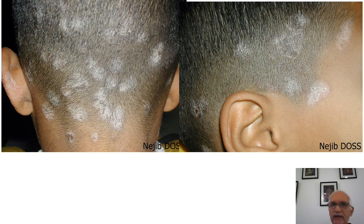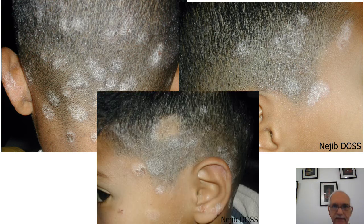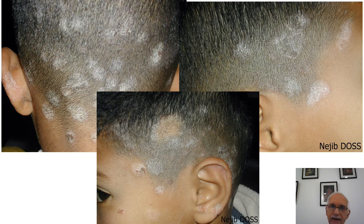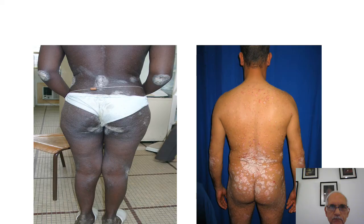This boy has scaly patches on the scalp with normal hair — a feature that fits with the diagnosis of psoriasis. But if we look at the side of the scalp, there is a patch without hair. It was tinea, so this patient has both psoriasis and tinea capitis.